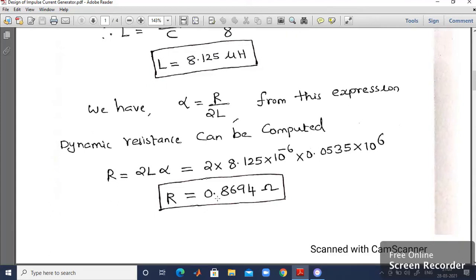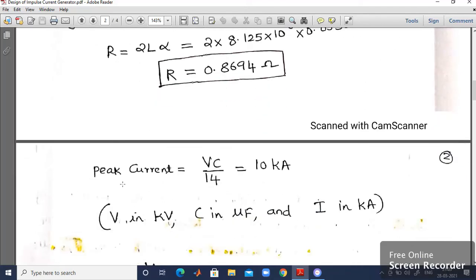Finally, I will be getting the value of R is equal to 0.8694 ohm. This is the value of R. So I have got the value of L and R. Afterwards, I will be getting the peak current expression for peak current. That is equal to VC divided by 14. That is equal to 10 kilo ampere.